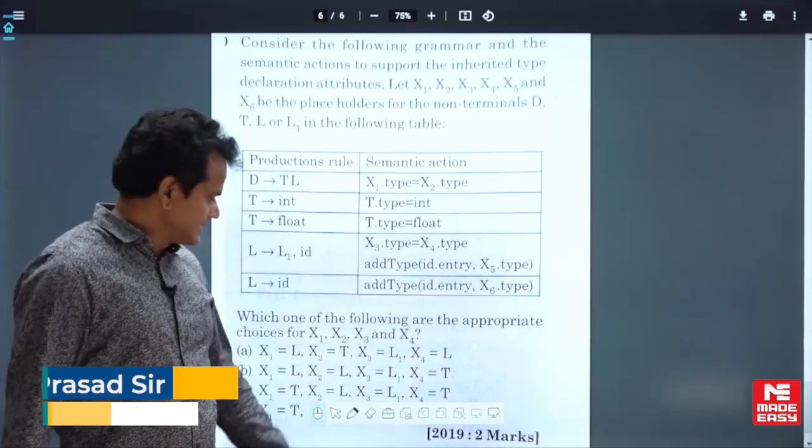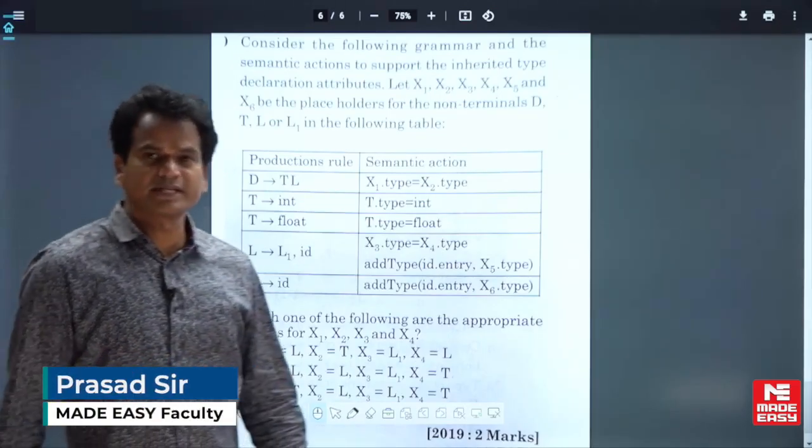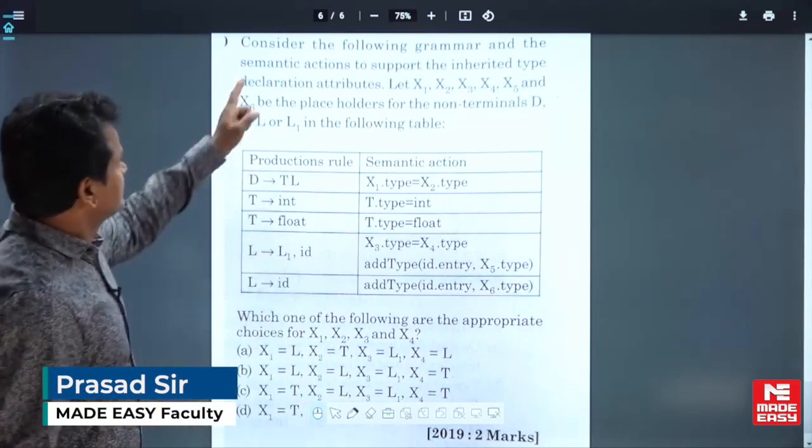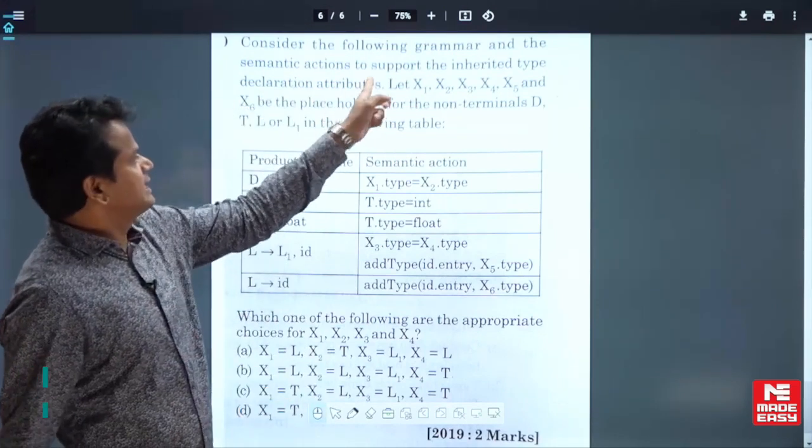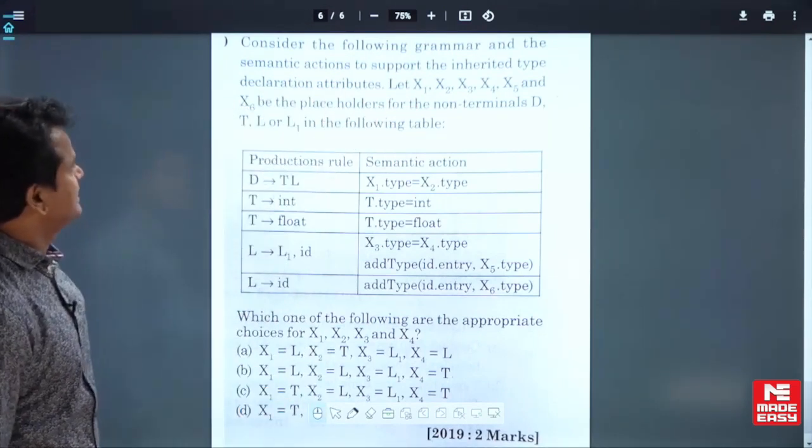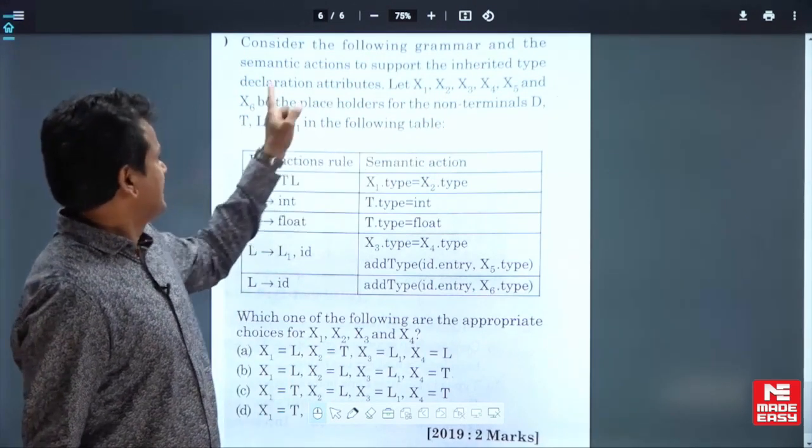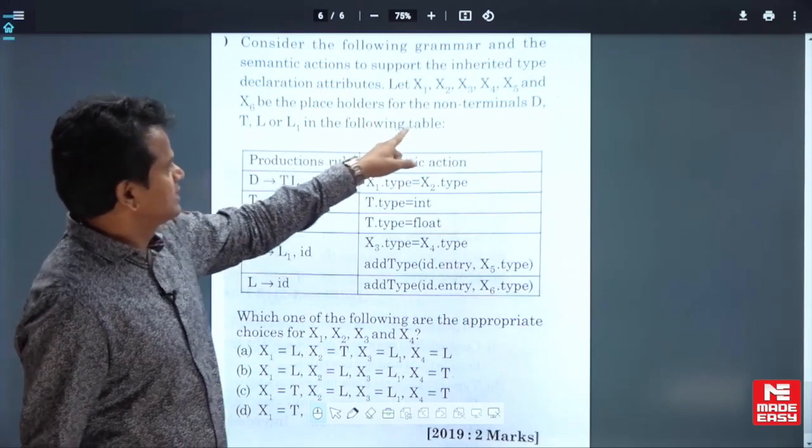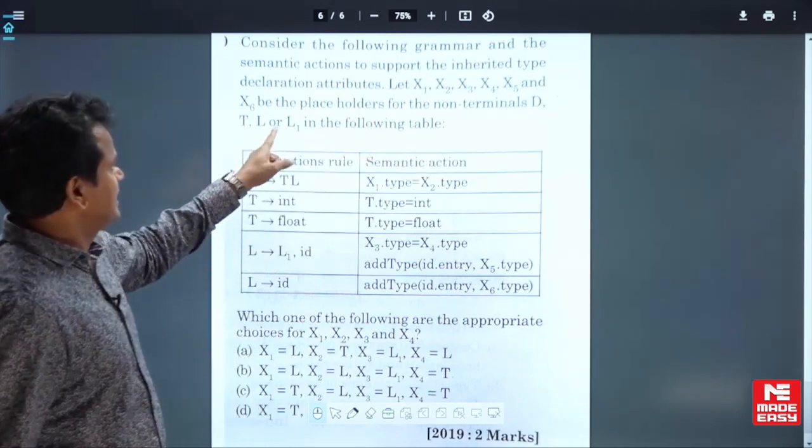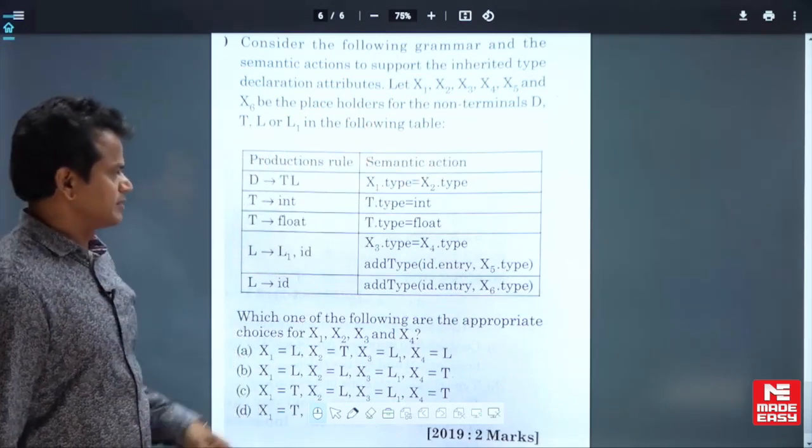Next question. It is given for 2 marks in 2019. Consider the following grammar and semantic action to support the inherited type declaration attributes. Let x1, x2, x3, x4, x5 and x6 be the placeholders for the non-terminals D, T, L or L1 in the following table.